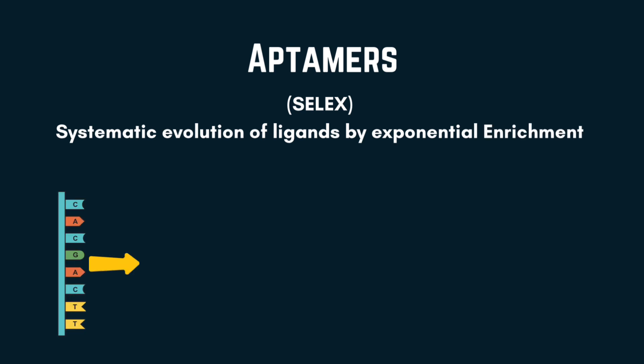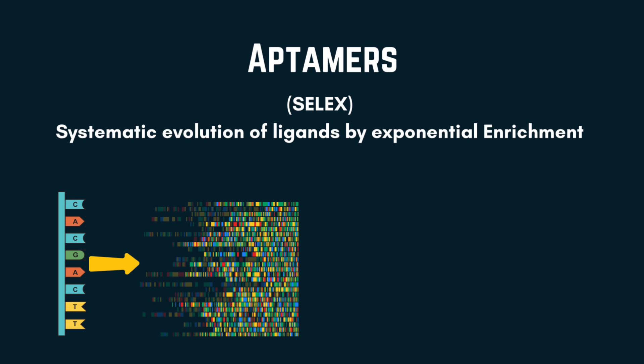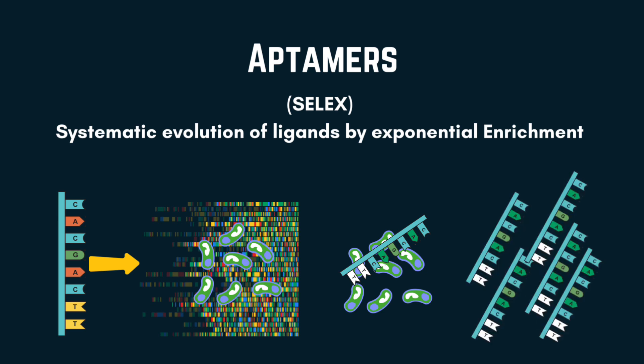Aptamers are produced through a process called SELEX, Systematic Evolution of Ligands by Exponential Enrichment, which involves: 1) creating a large library of random nucleotide sequences, 2) incubating the library with the target molecules, 3) selecting sequences that bind to the target with high affinity, and 4) amplifying the selected sequences. This process is entirely in vitro, making aptamers' production faster and more cost-effective.